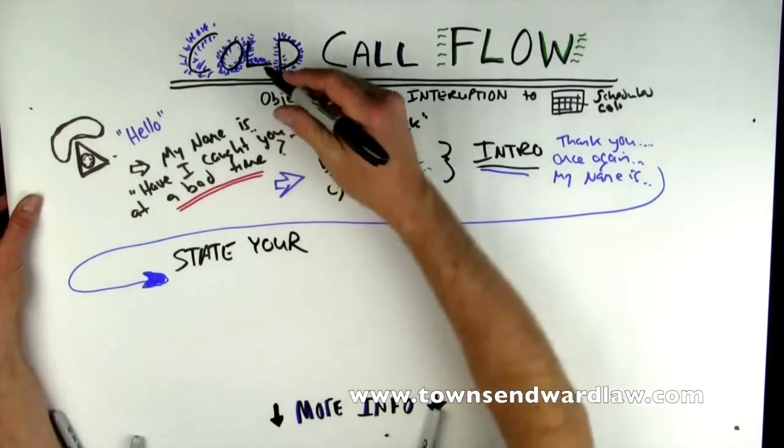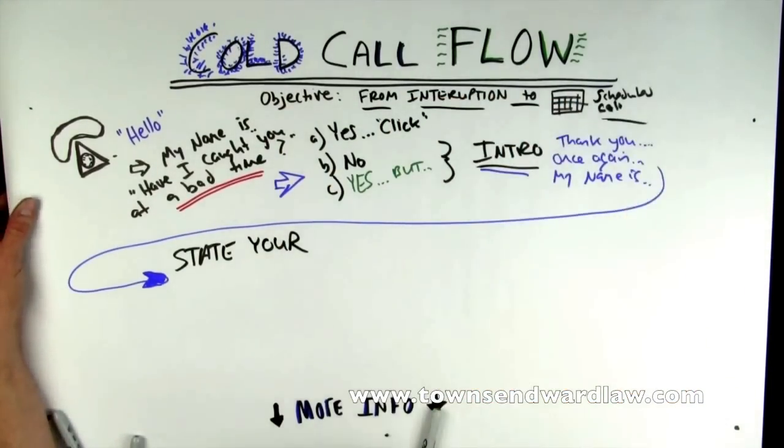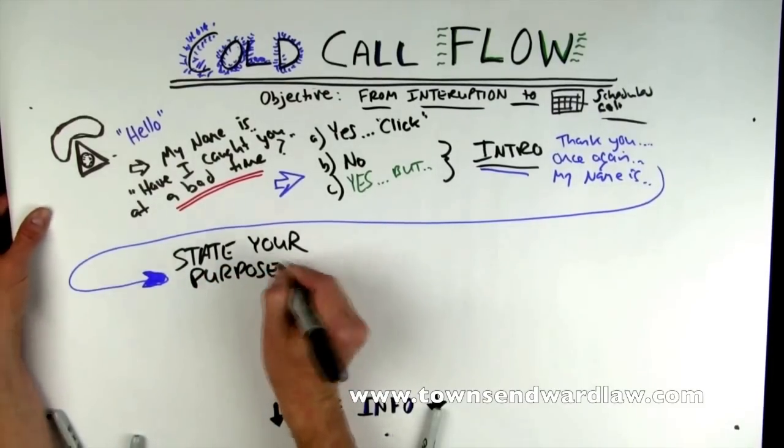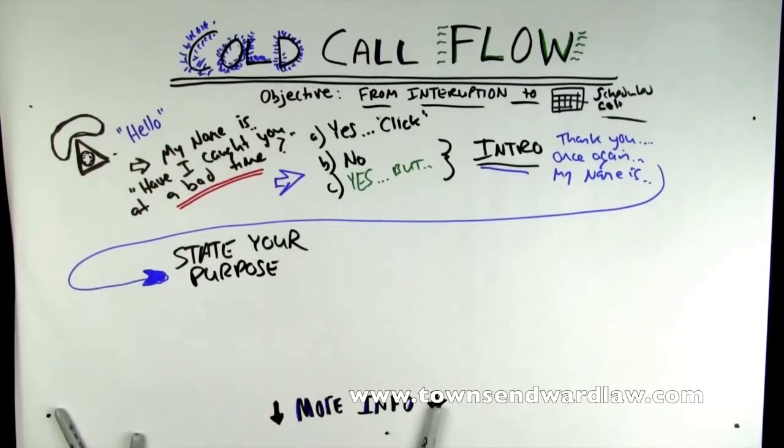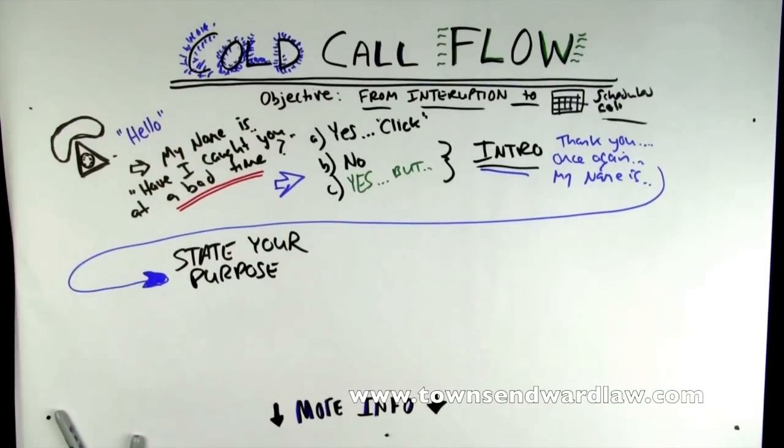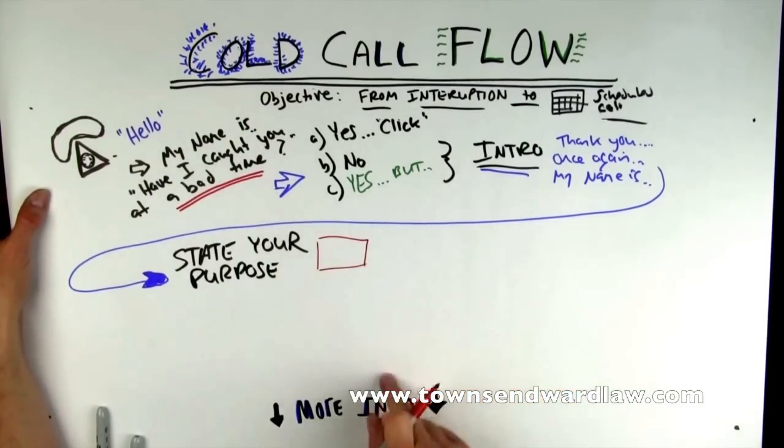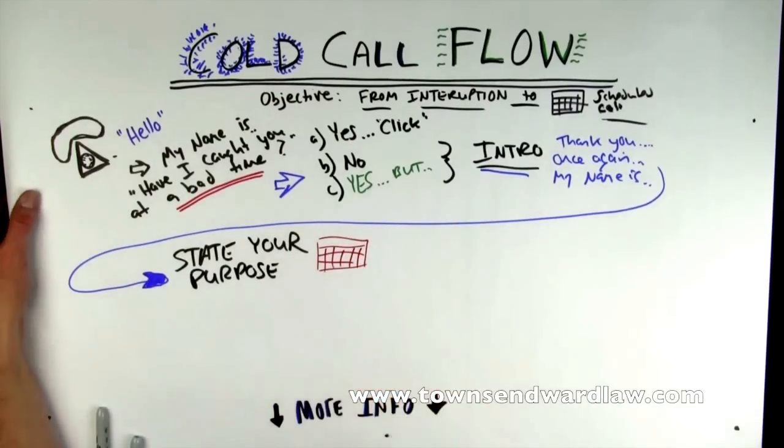The answer we already said is we're trying to move from an interruption to a scheduled interaction. So we're going to say something like, the purpose of my call is I'm looking to get 10 to 15 minutes next week on your calendar for a brief introductory conversation. The important thing is don't spend a lot of detail.